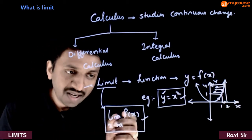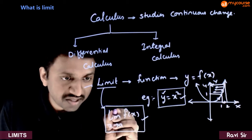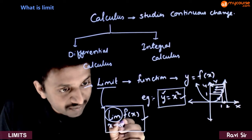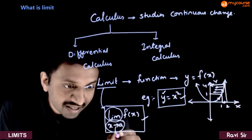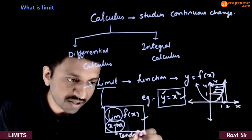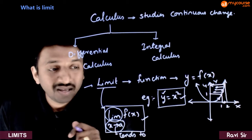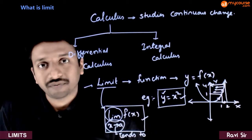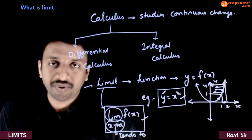Here you have some new terms. First is the term limit. The second term is what is the meaning of x tends to a — this is a symbol of tends to. So what is the meaning of x tending to a, and what is the meaning of limit x tends to a f of x? Let us try to understand each of these separately.